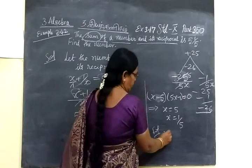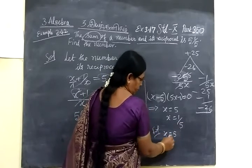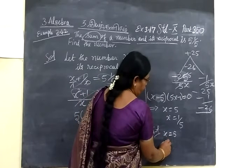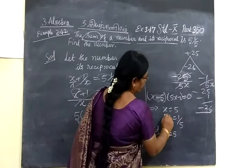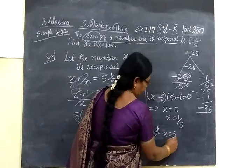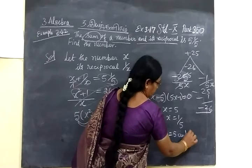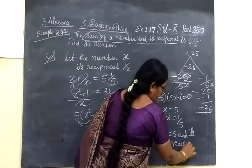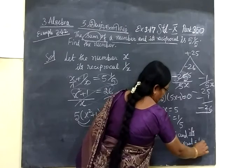Therefore the solution means the numbers are x equal to 5 means its reciprocal 1 by x, and the reciprocals equal to 1/5.